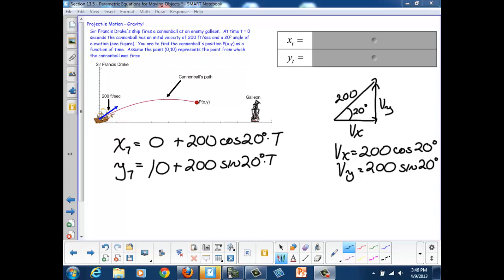And when we're working with feet per second, our gravity term is going to be negative 16t squared. So we'll slip that into our y equation, negative 16t squared.